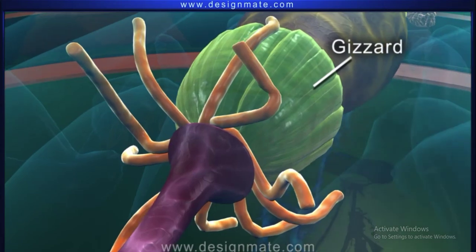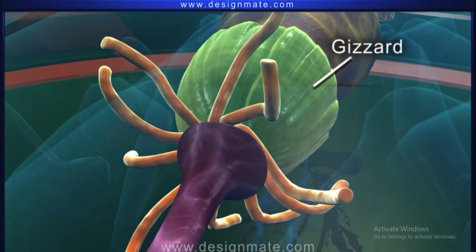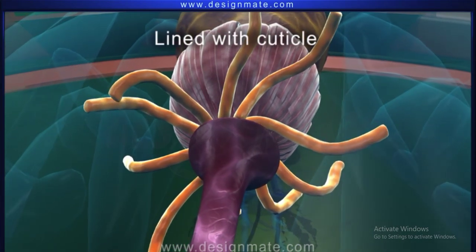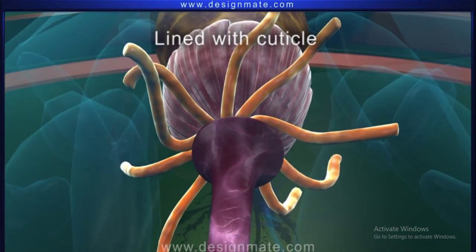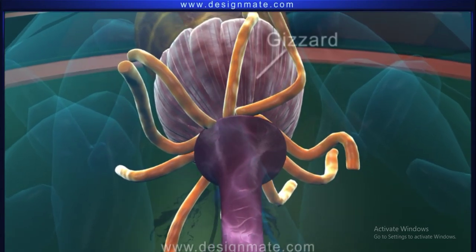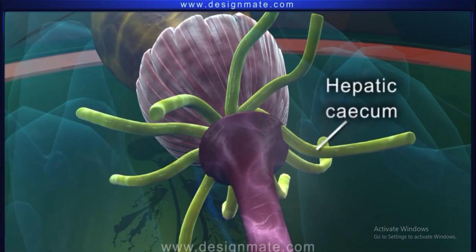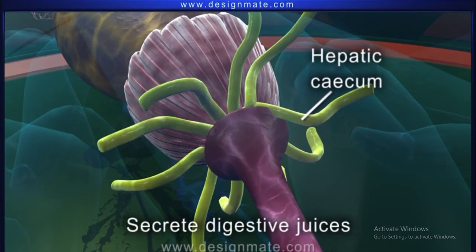Six chitinous teeth are found within the gizzard. It is entirely lined with cuticle internally. At the junction of the gizzard and midgut there are eight tubular hepatic caeca which secrete digestive juices.